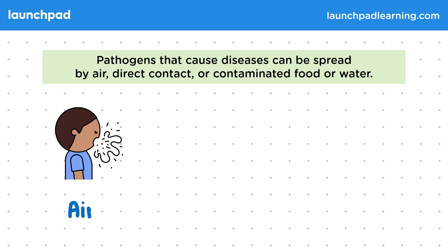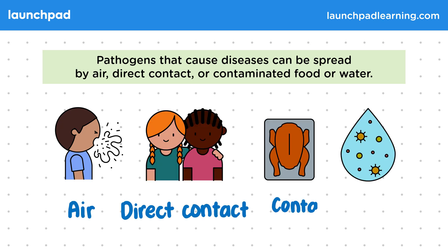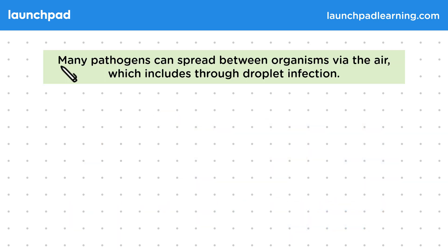For example, via the air, through direct contact, or contaminated food or water. For the exam, you need to state the ways in which pathogens can be spread. Let's start by looking at how pathogens are spread through the air. Many pathogens can spread between organisms via the air, which includes through droplet infection.